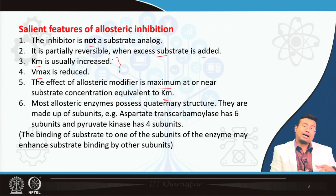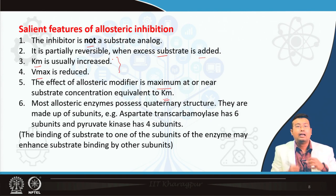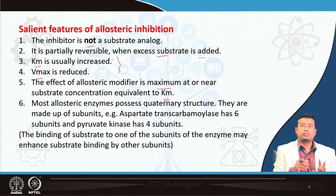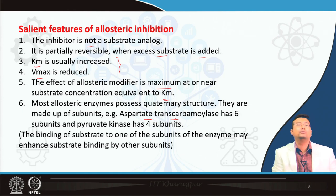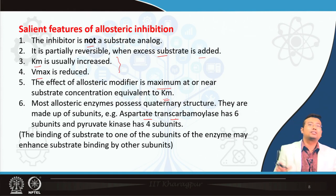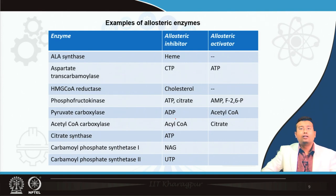One more important thing about allosteric enzymes: they are multi-subunit in nature. A few enzymes have multiple subunits, and generally binding of one substrate facilitates the binding of other subunits to the reactant or substrate. For example, aspartate transcarbamoylase has 6 subunits and pyruvate kinase has 4 subunits. Through the course of this overview on integration of cellular metabolism, every reaction of every enzyme will be explained.